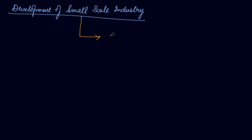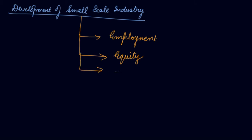The development of small-scale industry had two objectives: employment and equity. Less equity was required for the small-scale industry. These are part of what is called the three E's — the third being equality.